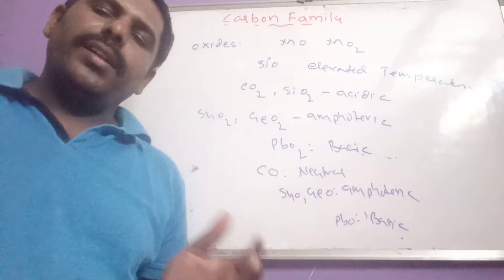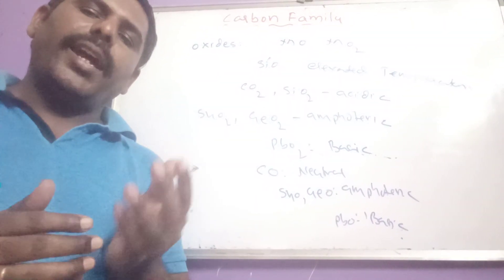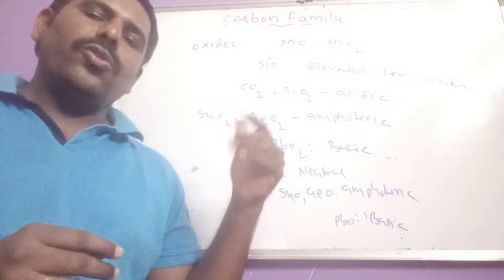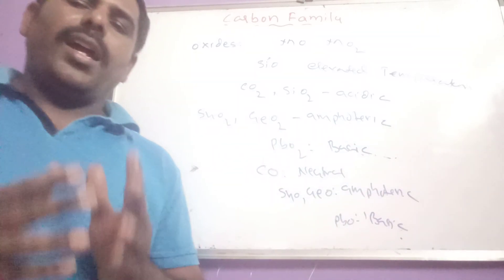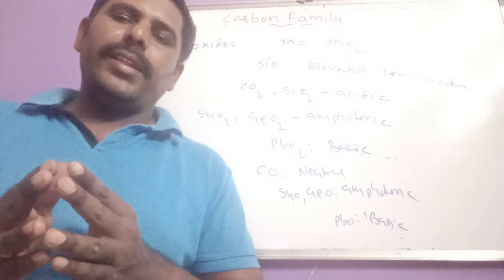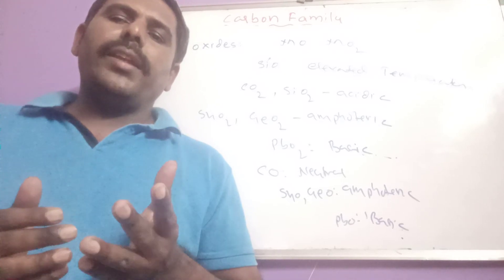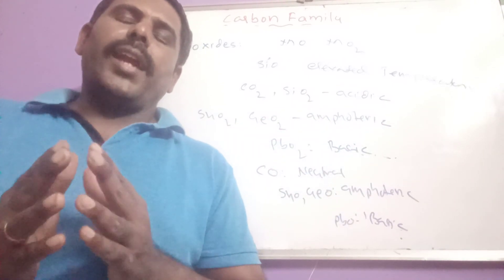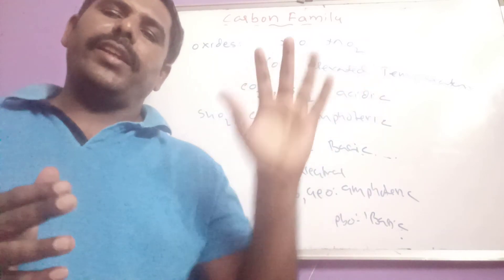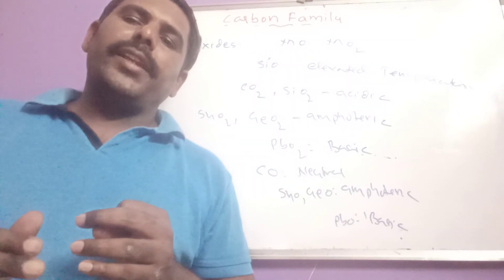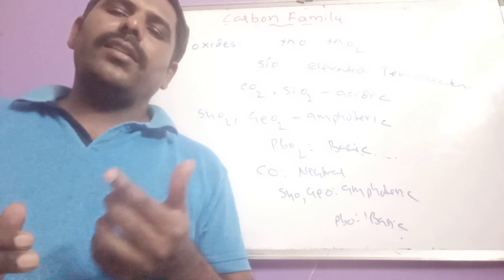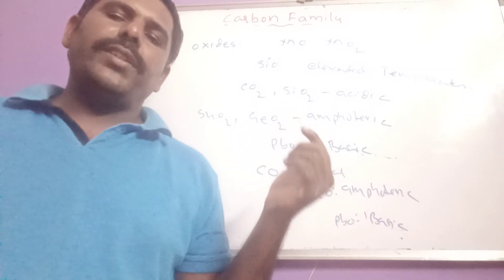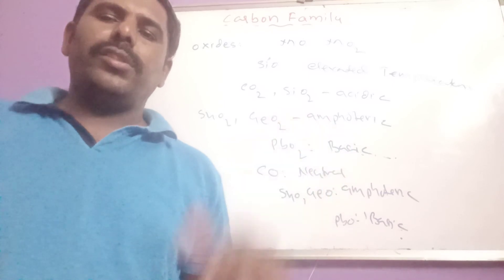Regarding catenation in 4th A group elements: carbon shows the highest catenation ability. Catenation means the self-linkage of identical atoms to form chain or ring-like structures. Due to the high bond energy of the C–C bond, carbon has a greater ability to form chain structures extending to infinity. From top to bottom, catenation ability decreases. In silicon, catenation is confined to only 8 atoms. These are the physical and chemical properties of 4th A group elements.